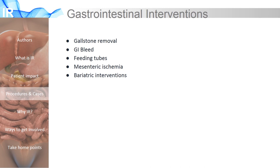In addition to treatments of the vascular system, IR also treats pathologies of the gastrointestinal system. For example, IR can be used to remove gallstones, treat bleeds in the GI system, and insert feeding tubes that go through the skin and into the stomach. Lack of blood flow to the GI system causing abdominal pain, called mesenteric ischemia, can also be treated by IR.